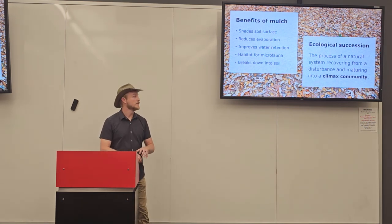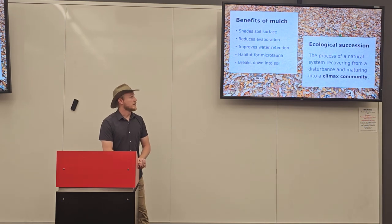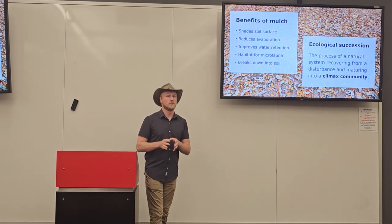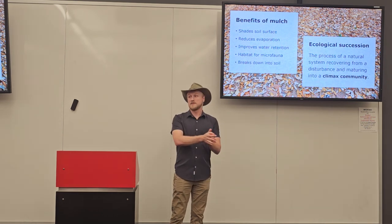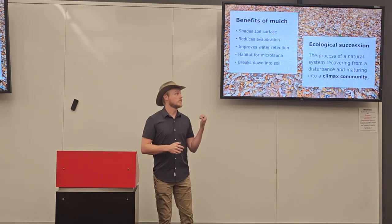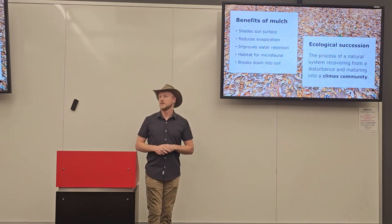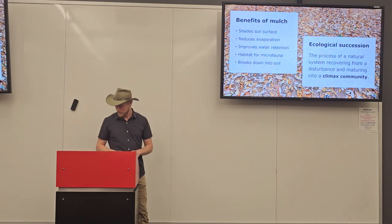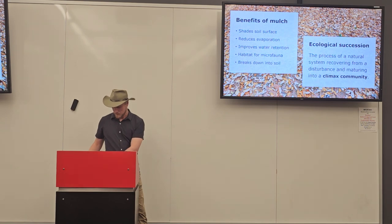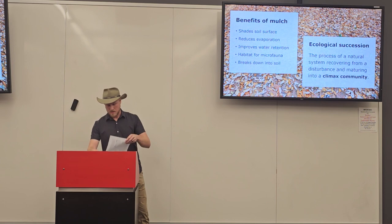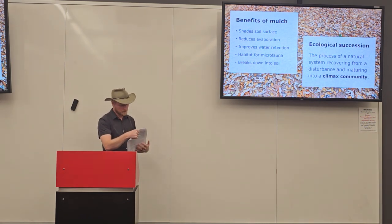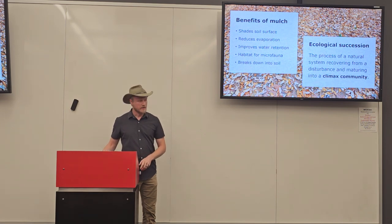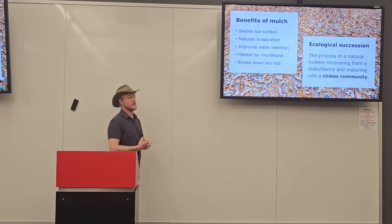Ecological succession is this beautifully designed system whereby disturbed sites recover and go back to a mature system through the work of pioneer plants going through different stages of succession. I would argue that if we want to move from systems low in diversity to systems high in plant diversity, we should mimic ecological succession because it works so well. Now I'll explain why I started talking about mulch in the first place.